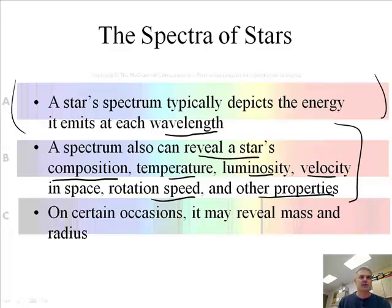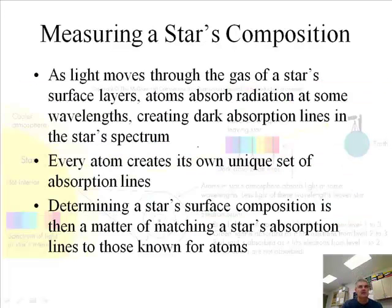You can find out its composition. That's what's in it. Its temperature. We know what that means. Its luminosity. That's how bright. Its velocity. How fast it's moving away from you. Its rotation speed and other properties. On certain occasions, it may even reveal mass and radius. It has to be with the binary stars, it turns out.